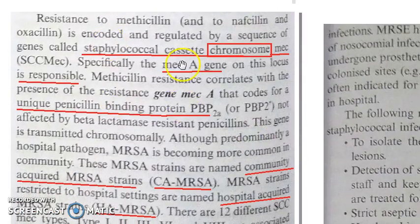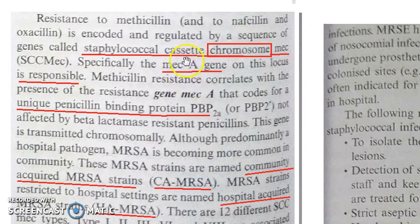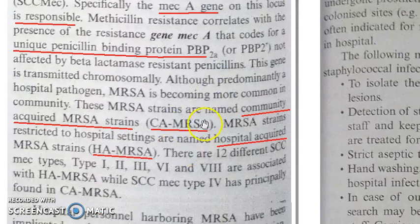The resistance is achieved through a sequence of genes called the SCC mec genes, within which the mecA gene is specifically responsible for MRSA. There are two types of MRSA: CA-MRSA (community-acquired) and HA-MRSA (hospital-acquired).